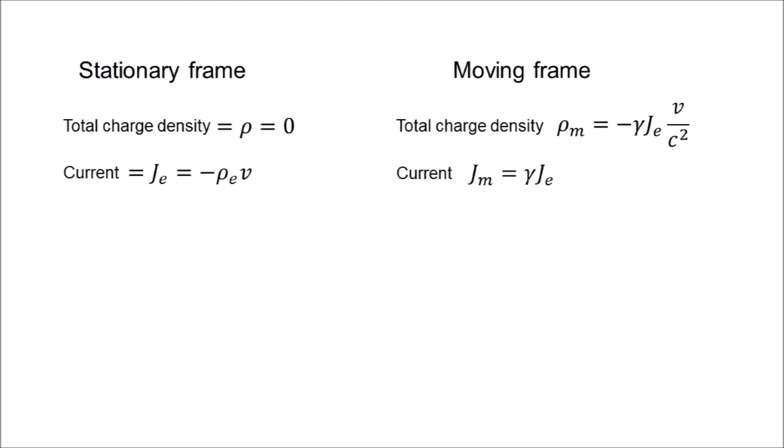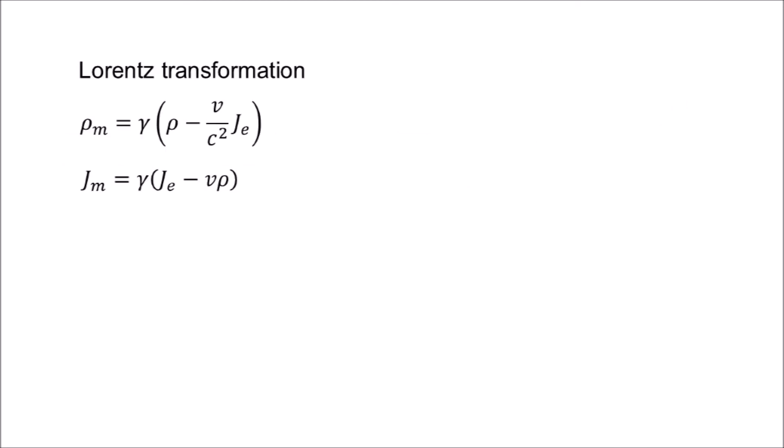If you've been following my videos, you probably know that we could have obtained these results in about 5 seconds, by simply doing a Lorentz transformation of rho and j. If you need to refresh your memory, I put the relevant video in the description.